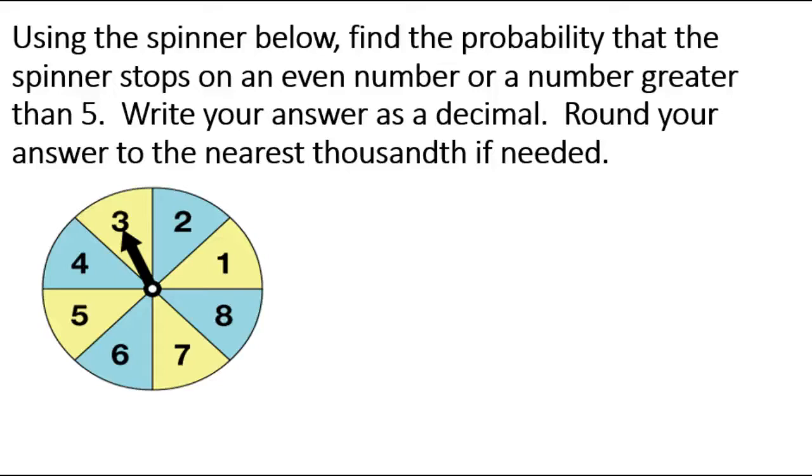We're still working on probability. This one has a spinner on it, though. So this one states, using the spinner below, we are to find the probability that the spinner stops on an even number or a number greater than 5. And we have to write our answer as a decimal and round it to the nearest thousandth.